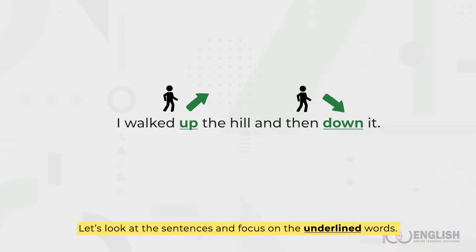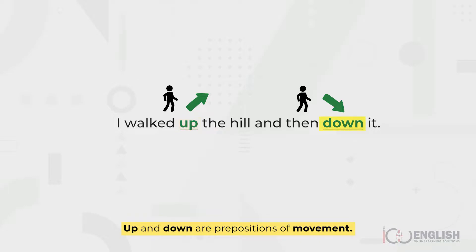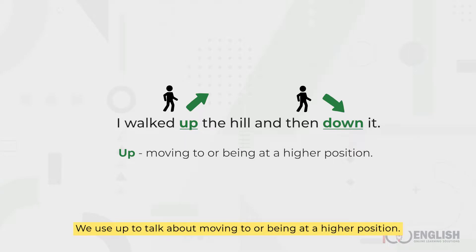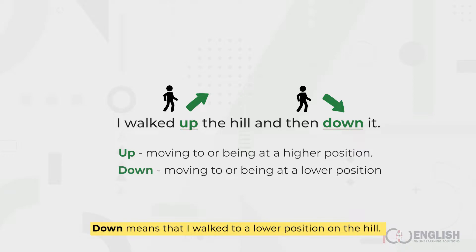Let's look at the sentences and focus on the underlined words. Can you find the prepositions of movement? That's right. Up and down are prepositions of movement. What does the word 'up' tell us about the hill? Up means that I walked to a higher position on the hill. We use 'up' to talk about moving to or being at a higher position. What does the word 'down' tell us about the hill? Down means that I walked to a lower position on the hill.